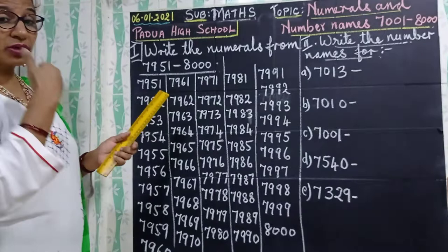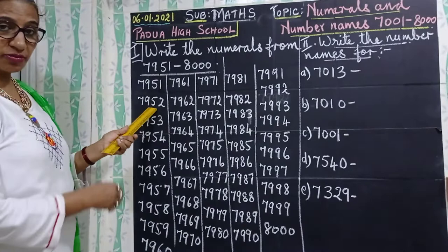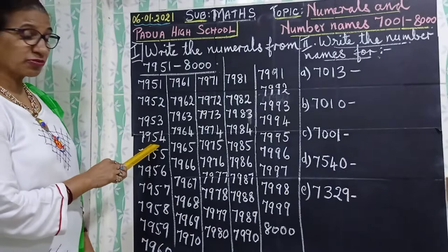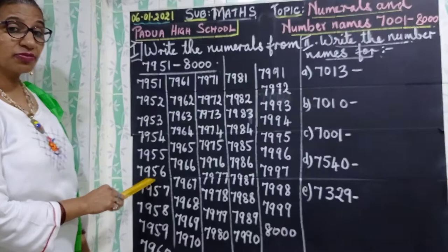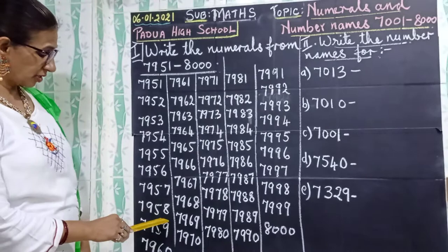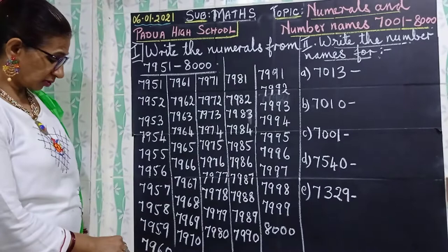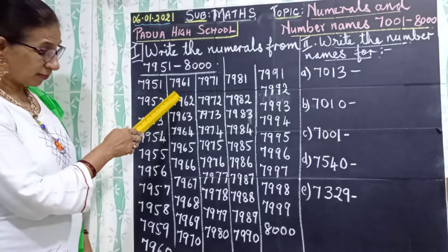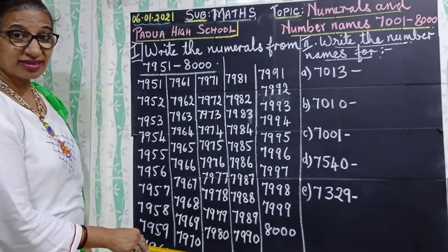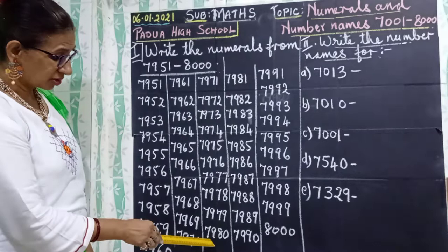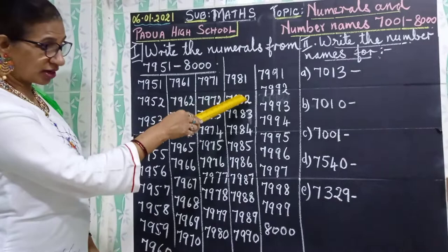So when you read it, how will you read now? 7951, 7952, 7953, 7954, 7955, 7956, 7957, 7958, 7959, 7960. Then 7961 and then it goes on till you come to 7969, 7970 and then of course 7971 and it goes to 7980, and then 7981 and then to 7990.